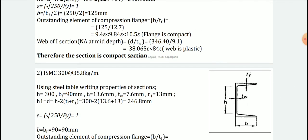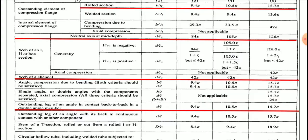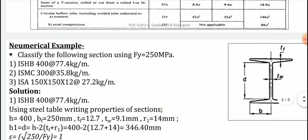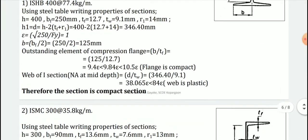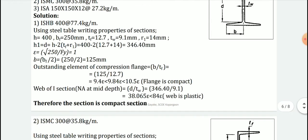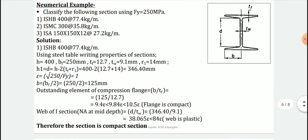For the web of the I-section with neutral axis at mid-depth, the ratio is d/TW = 346.40/9.1 = 38.07 epsilon, which is less than 84 epsilon, so the web is classified as plastic. Comparing the two elements — flange is compact, web is plastic — the most critical element governs. Therefore, the classification of ISHB 400 is compact section.